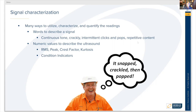We can also look at ultrasound statistically — examining the numeric values. The four we are typically concerned with are root mean square (RMS), peak, crest factor, and kurtosis. These can indicate conditions.